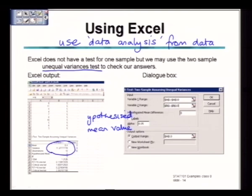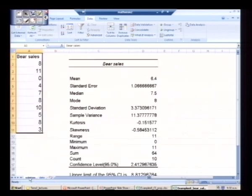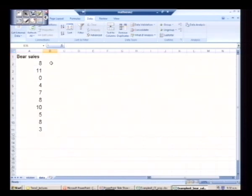So what we're now going to do is try to go into Excel and here we have the bear sales. So when we are looking at the bear sales here, the data, the information we have is that the sample mean is 6.4 and what we're looking at here with the data is to put the hypothesized mean in here which is 5.